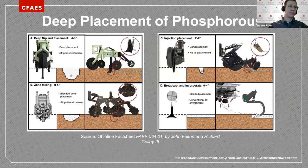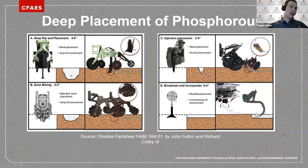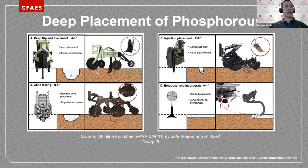Deep placement of phosphorus is already here but it's also an up-and-coming practice in the sense that it's not yet widely adopted. Images from an Ohio State Extension fact sheet show different equipment capacities that have developed over the years and horsepower requirements for applying phosphorus subsurface. Traditionally we have broadcast and incorporated, but deep placement represents a newer approach to reducing edge-of-field phosphorus losses.